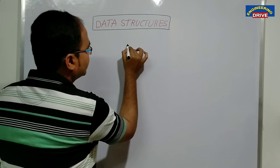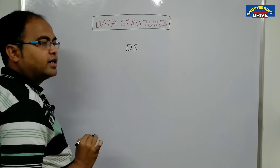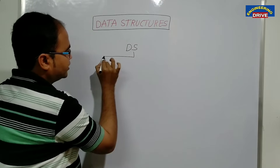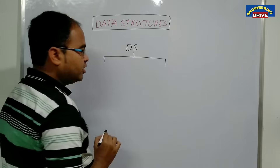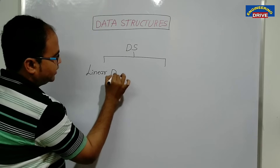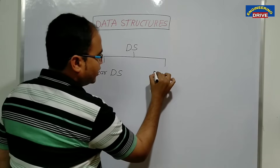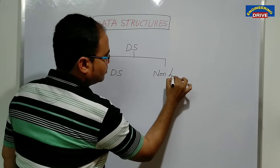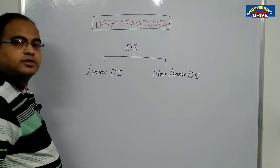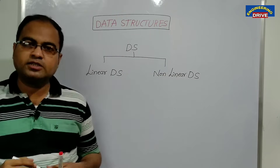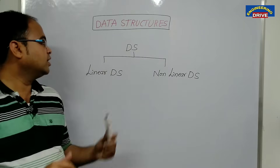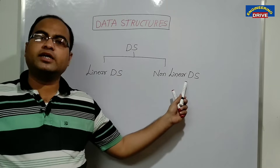In our computer there are two types of data structures supported. There are totally two categories of data structures supported by our computer. One is known as linear data structures, and another one is known as non-linear data structures.